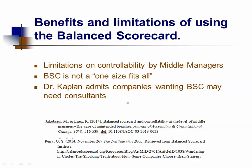Let's discuss the benefits and limitations of using the balanced scorecard. The key benefit is that it aligns with the strategic vision of the organization. However, Jacobson and Luegg specified a limitation in the controllability of the balanced scorecard by middle managers, related to ethical reasons and mismanagement. In reality, it's not the limitation itself — it's the human factor of middle managers not actually doing the right things to implement the balanced scorecard framework.